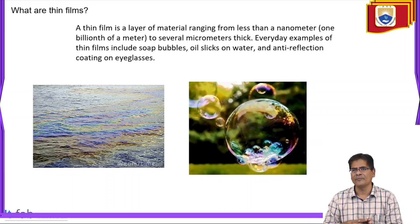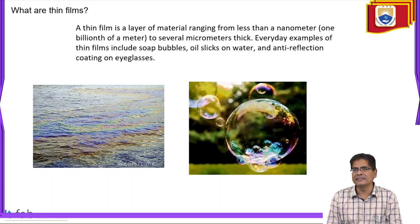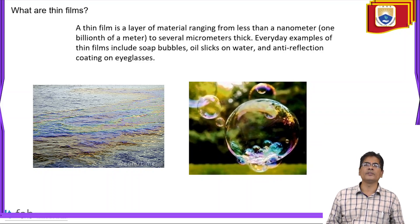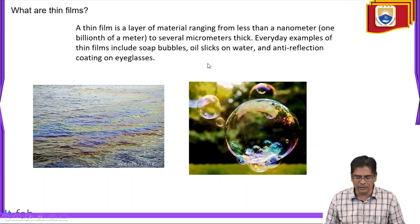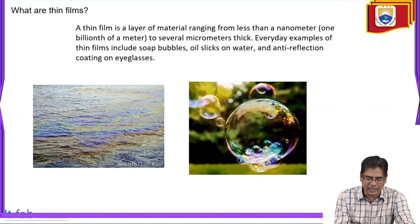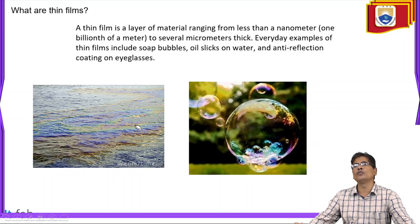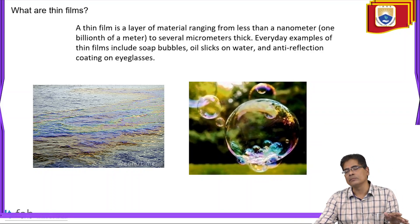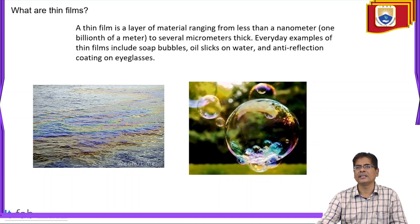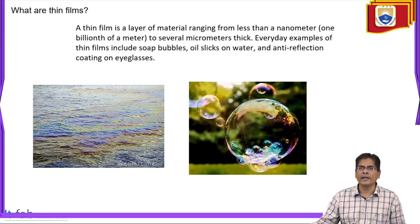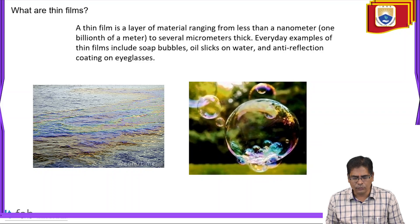These are some of the thin films you can see: on a water surface, certain colors are floating, which is a thin film. Oil floats on water by creating a thin film. A soap bubble is also a thin film — if you push the bubble, it will break and liquid particles come out. Anti-reflection coatings on eyeglasses are also thin films.